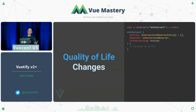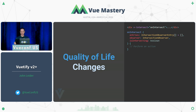Some quality of life changes: we are working with the Intersection Observer API, which has polyfills for Internet Explorer 11. When I first saw it, I'd never seen it before, and I thought — wow, this is really powerful. We could use this to do things like lazy loading.